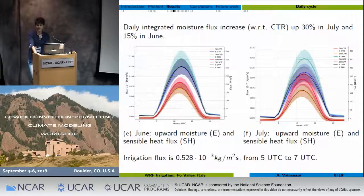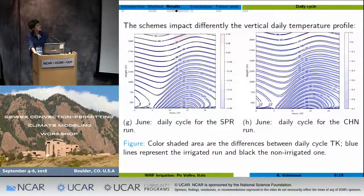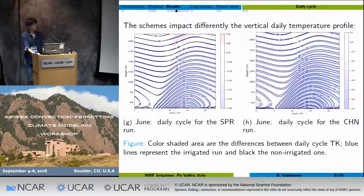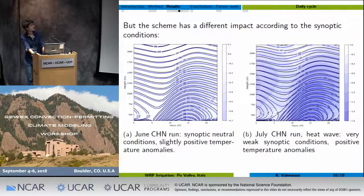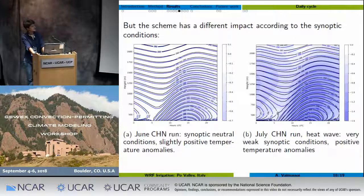This will have an impact on the vertical profile. Different methods have different impacts on the vertical structure. Showing two plots — the sprinkler and the channel — the sprinkler has most of its impact during the central part of the day, while the channel method affects the vertical structure throughout the whole day. The channel method, averaged for June and then July, shows that during June the magnitude of the change is smaller than during July.